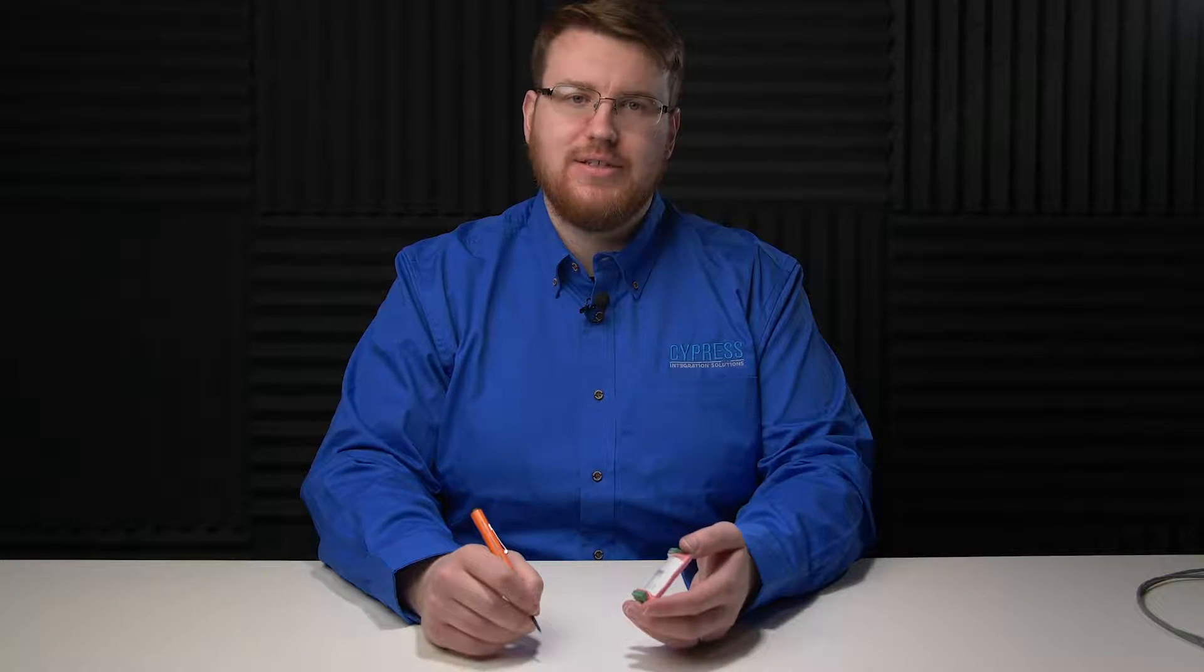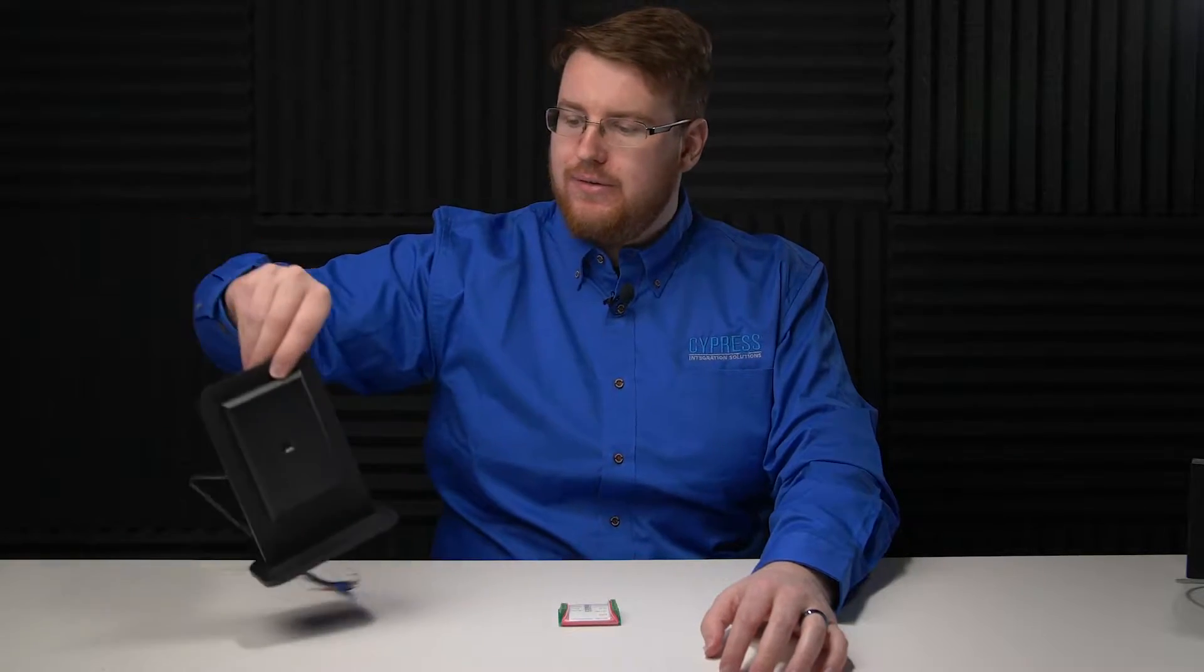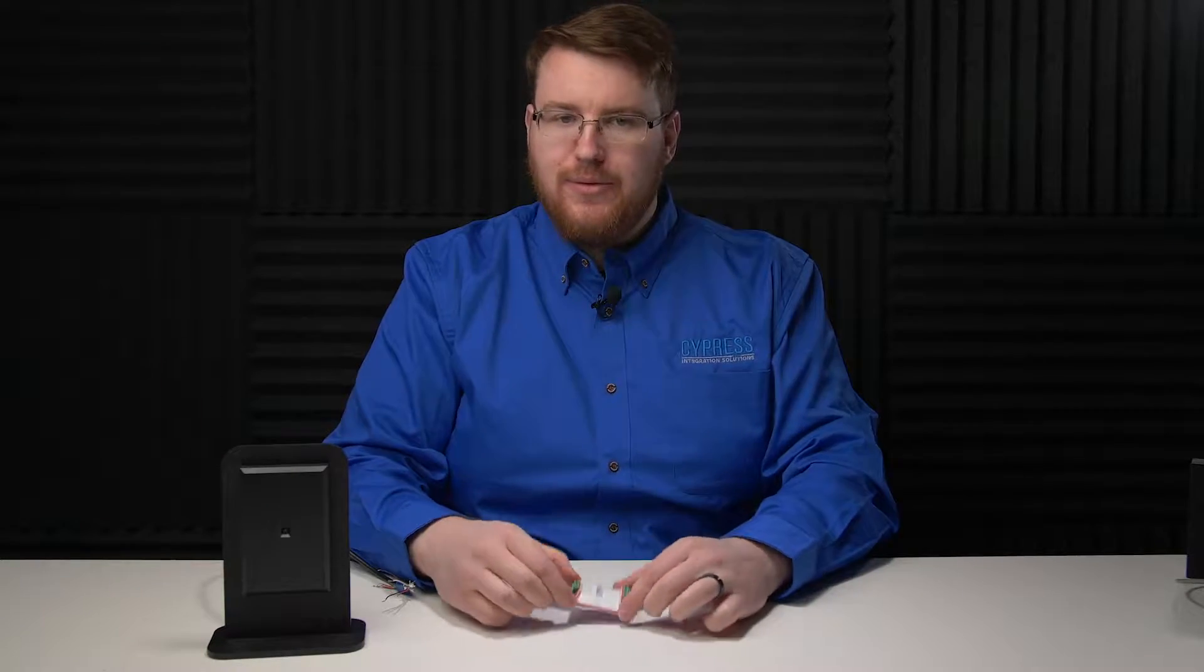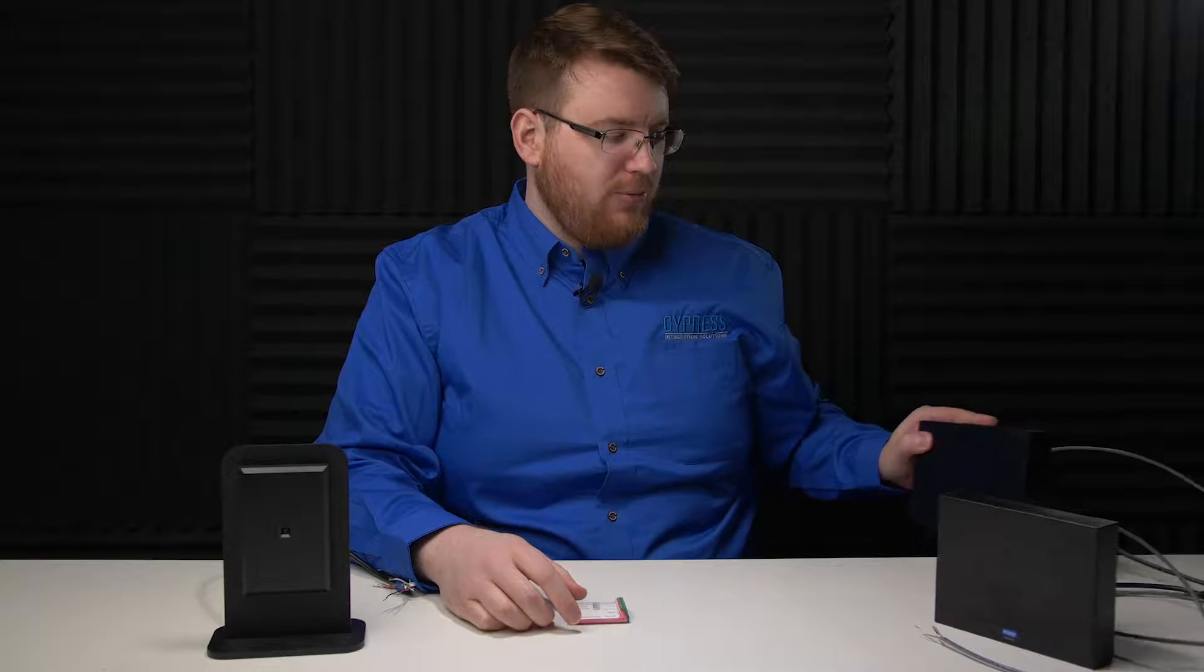Now I will show you how to connect one Wiegand reader to two Wiegand access controllers using the CVX OPTW. Here are the overall parts of the system: one Wiegand reader, the CVX OPTW, access controller A, and access controller B.